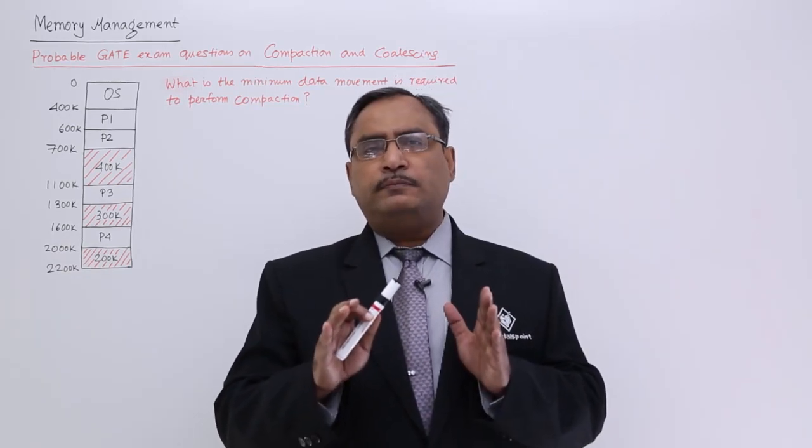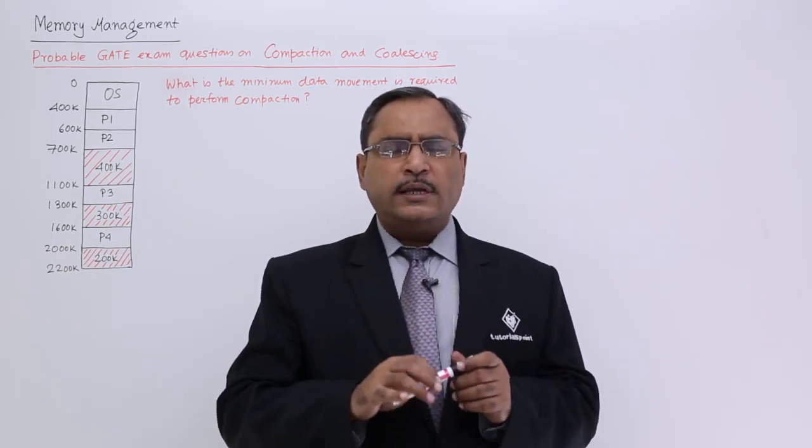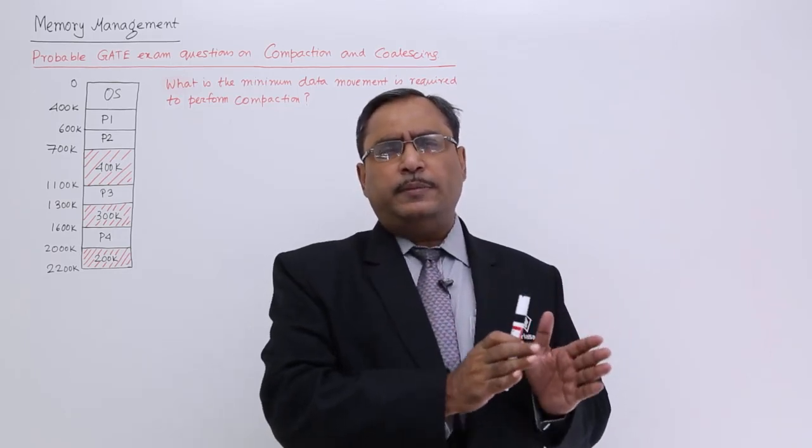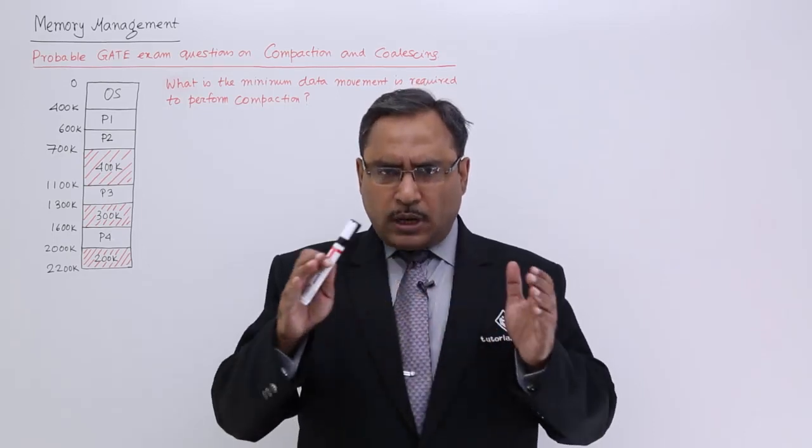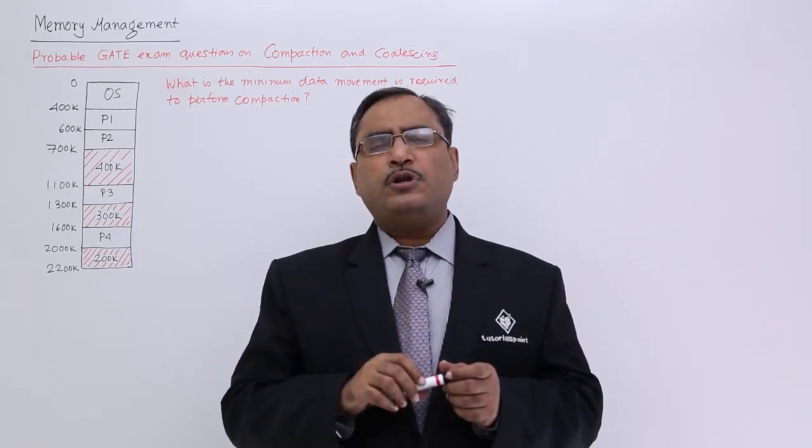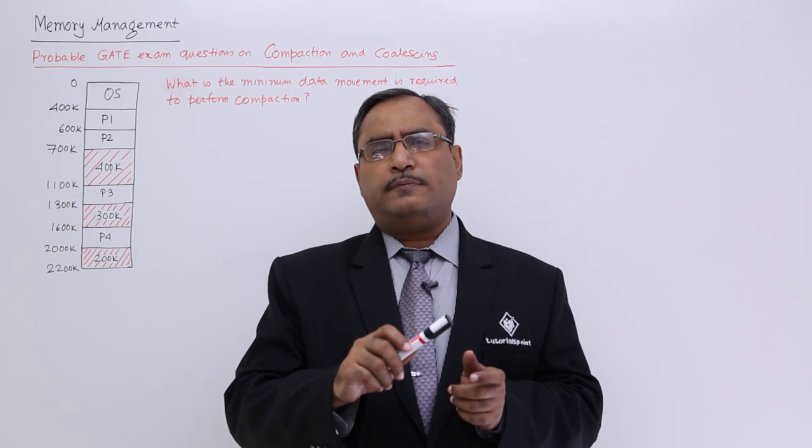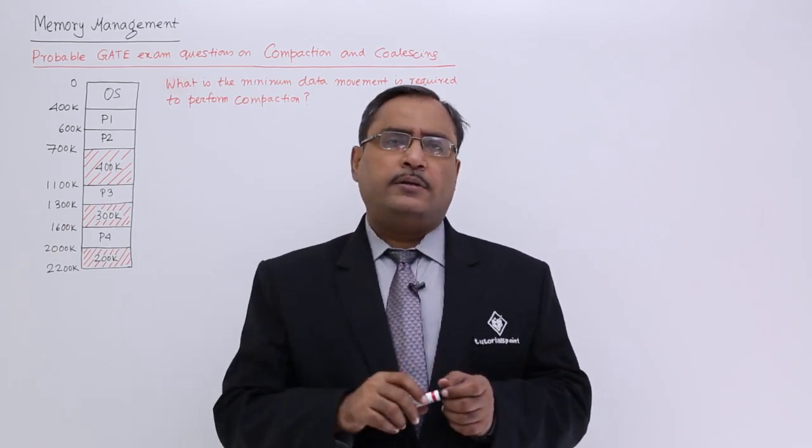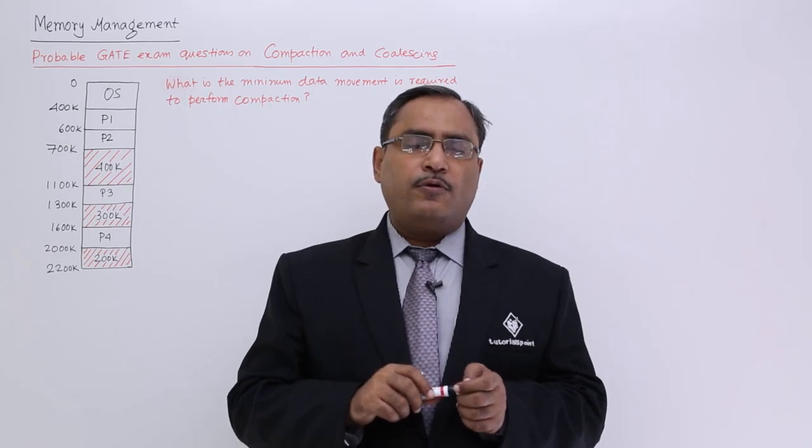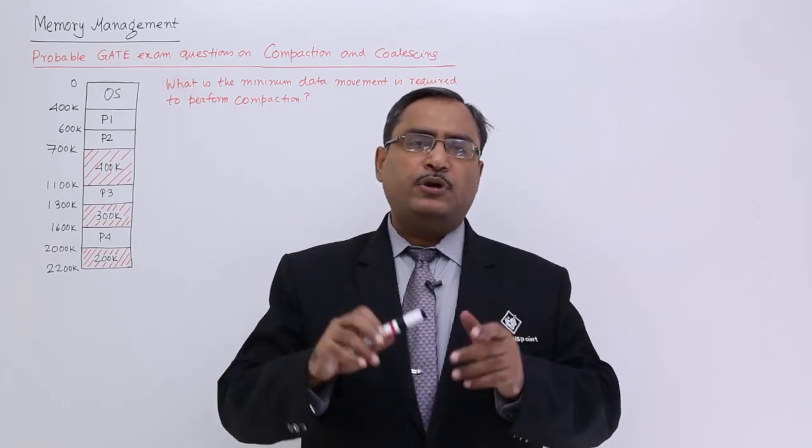Let us suppose, we are having four memory holes are there. So, let there be 200 KB, 300 KB, 400 KB and 500 KB. So, what is the total memory space? The total memory space is 300 plus 400, 500 plus 400, 900 plus 400, 1400. 1400 KB of memory space is free.